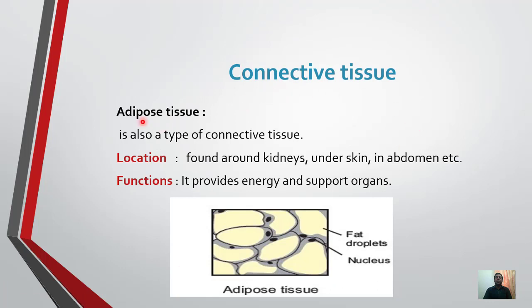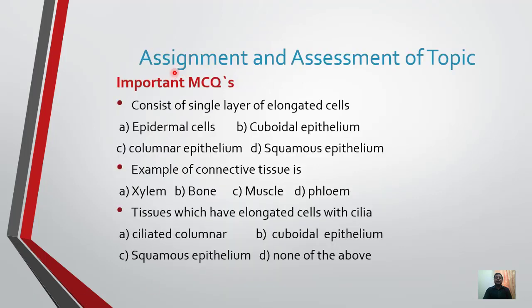The last type of connective tissue is adipose tissue, also called fat tissue. Location: found around kidneys, under the skin, and in the abdominal region. Function: it provides energy and also plays a supporting and cushioning role for different internal organs. Adipose tissue contains large amounts of fat droplets, and these fat droplets are the source of energy.